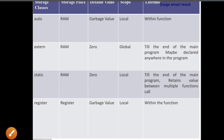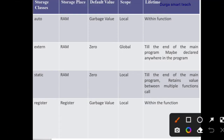Let's see one by one. This table shows the storage space, default value, scope, and lifetime. The first one is automatic. The keyword 'auto' is used to declare this type of variable. The storage space of auto is RAM — random access memory, the main memory. The default value is garbage value, so any value.